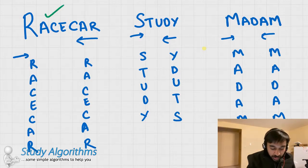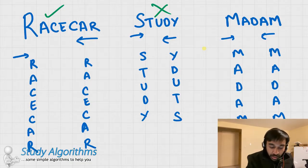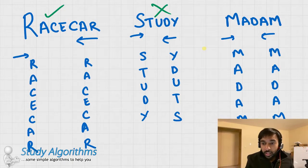But with the second string, study, if you read it forwards, it reads study. But backward it reads something gibberish like yduts. So this string is not a palindrome. And for the third string, madam, if you read it from the front or from the back, it still remains the same. So what we would say is that these two strings, racecar and madam, are a palindrome.